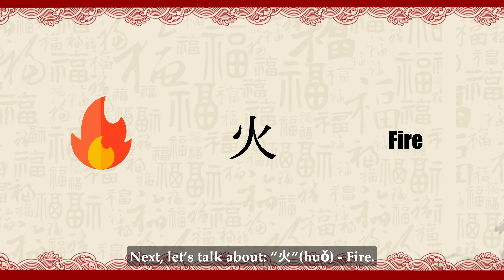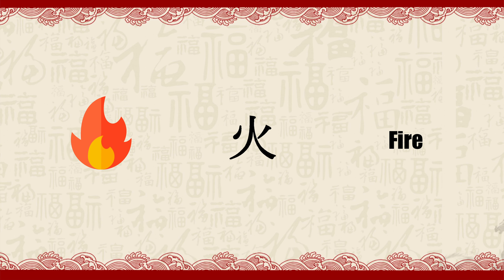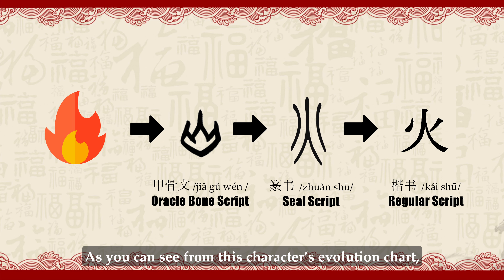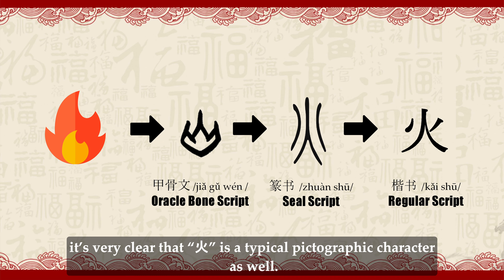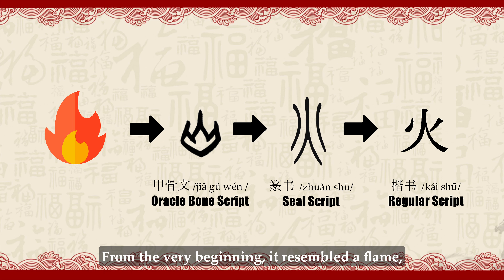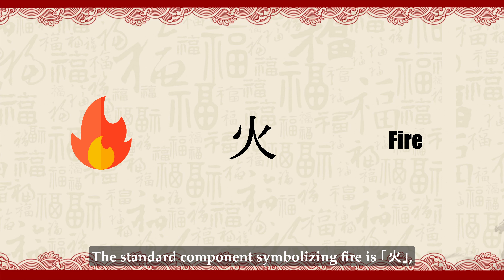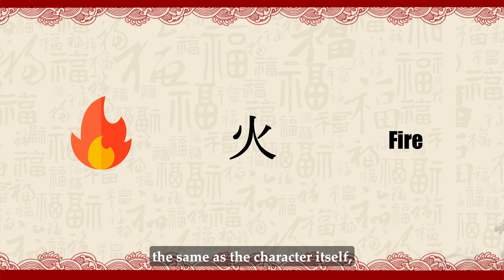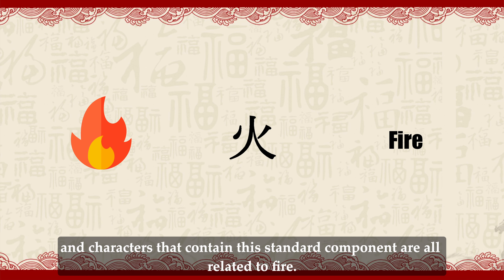Next let's talk about Huǒ (火), fire. As you can see from this character's evolution chart, Huǒ is a typical pictographic character. From the very beginning it resembled a flame and eventually evolved into its current form. The standard component symbolizing fire is Huǒ — the same as the character itself — and characters that contain this standard component are all related to fire.